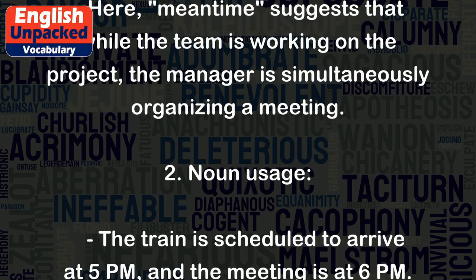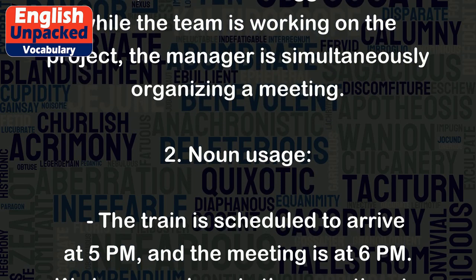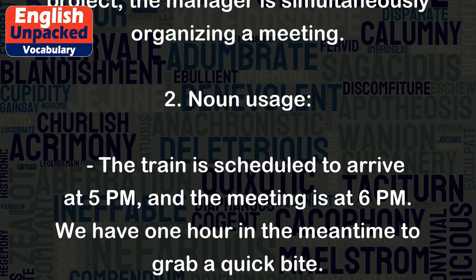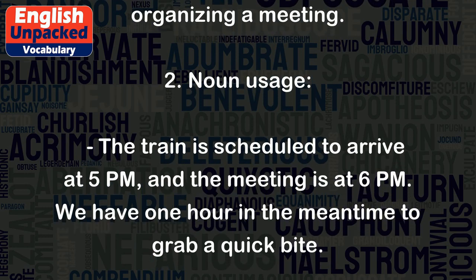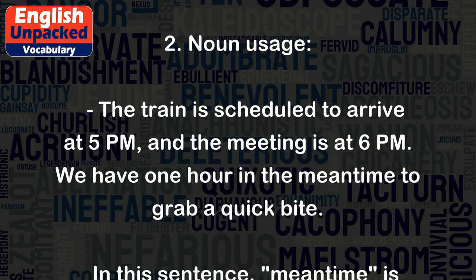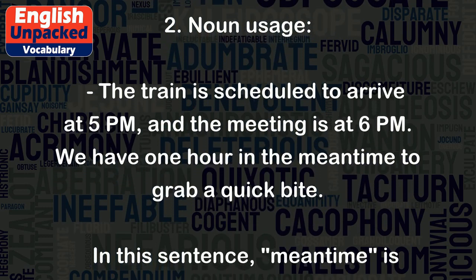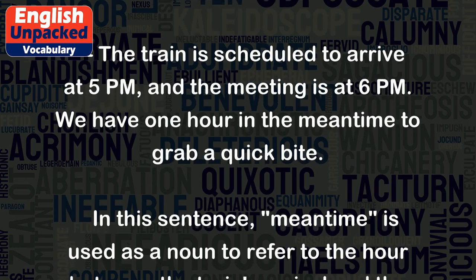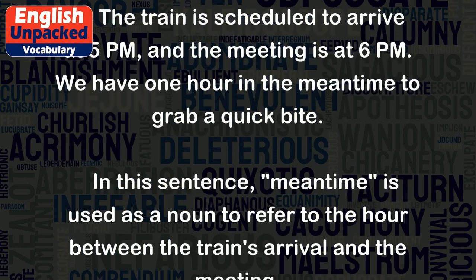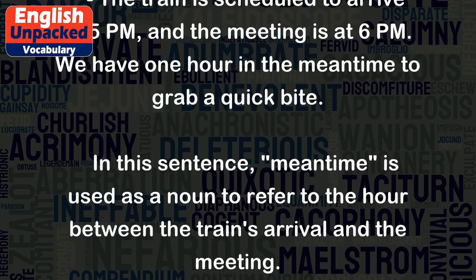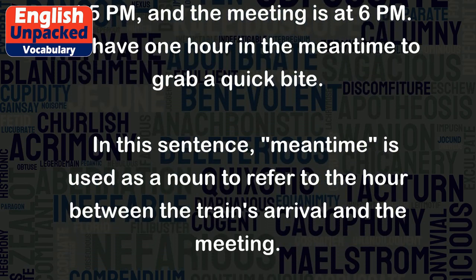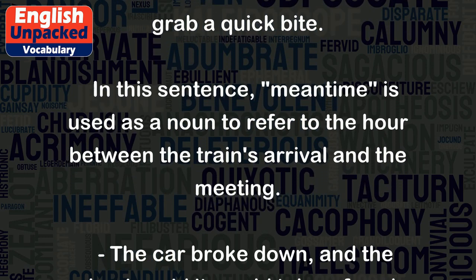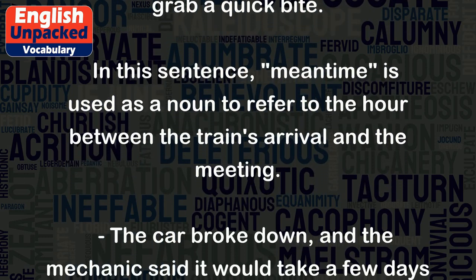Two: Noun usage. 'The train is scheduled to arrive at 5pm, and the meeting is at 6pm. We have one hour in the meantime to grab a quick bite.' In this sentence, 'meantime' is used as a noun to refer to the hour between the train's arrival and the meeting.